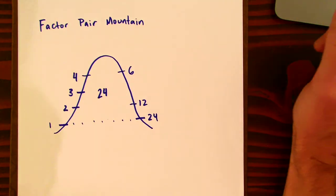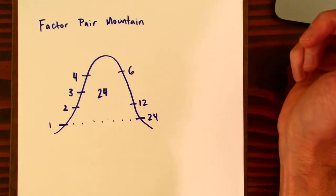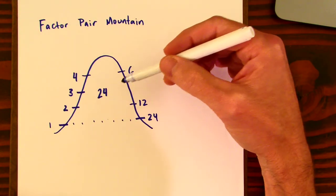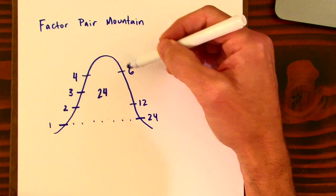Does five go in? No, because all multiples of five end in zero or five, and so we've already rounded out the top.